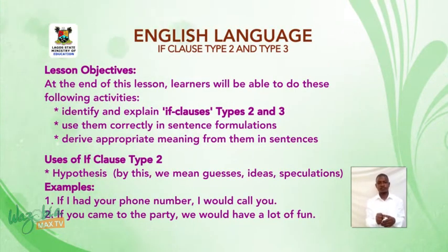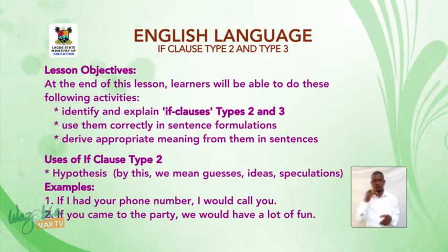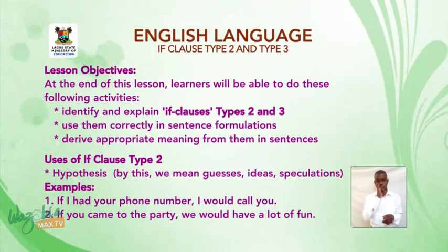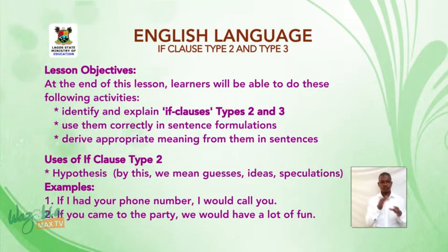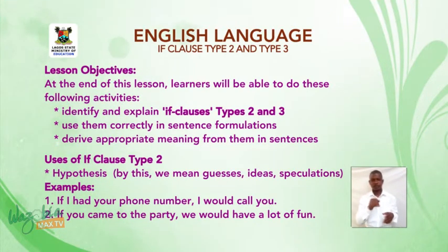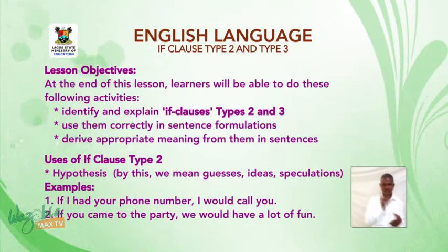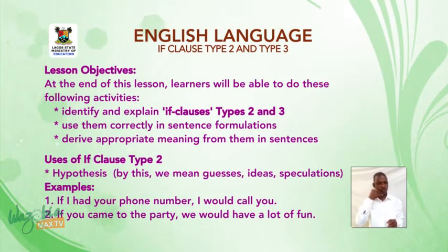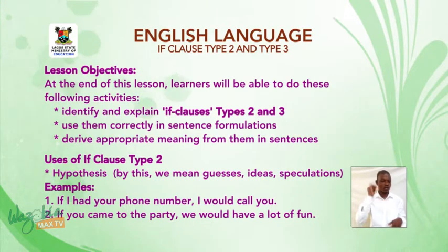Now we take the uses of if clause type 2. First is hypothesis — by this we mean guesses and speculations. Examples: One, if I had your phone number, I would call you. Two, if you came to the party, we would have a lot of fun.